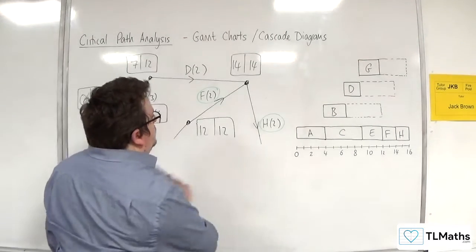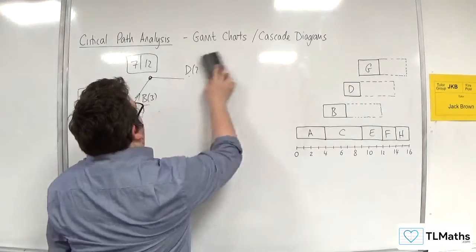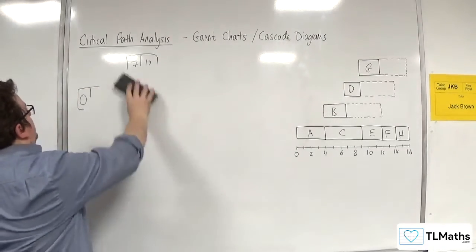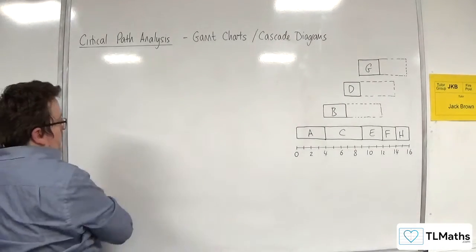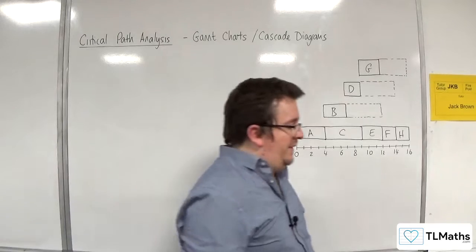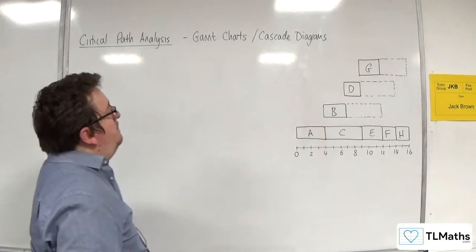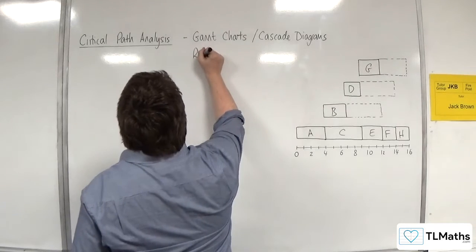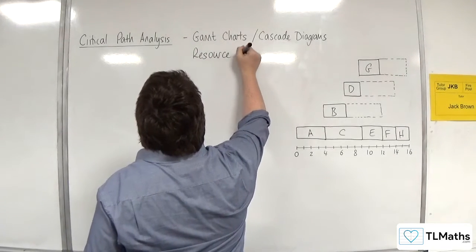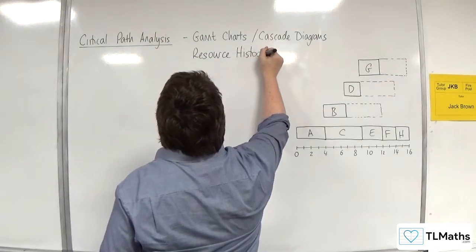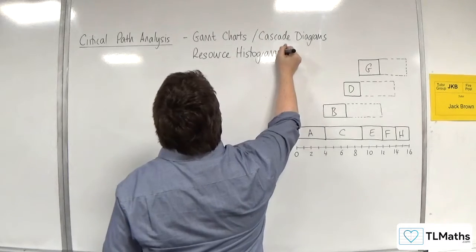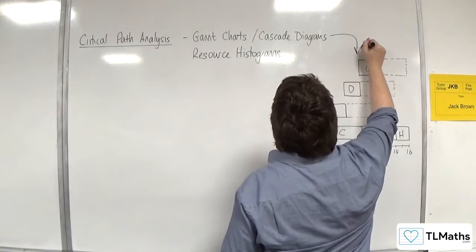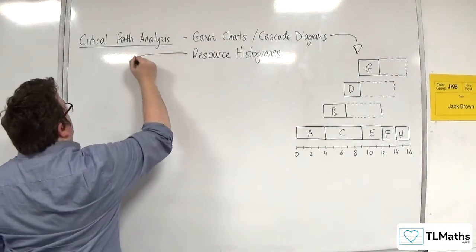So how do we do that? Well, essentially, we play Tetris. If you've heard of the game Tetris, it's kind of similar to that. The resource histogram. So now moving on to the resource histogram. That's that one. And now we're going to draw the resource histogram.